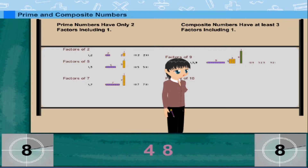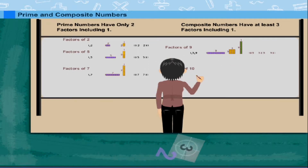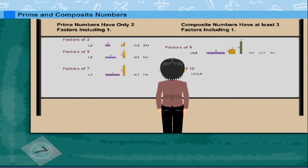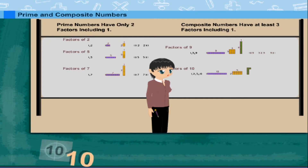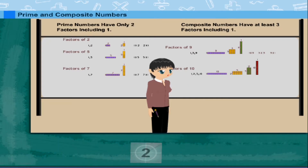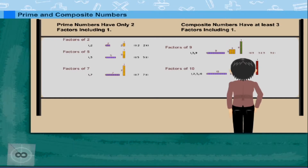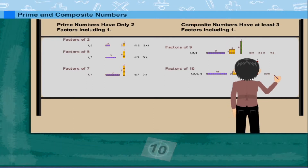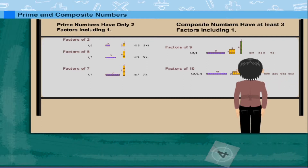And now she writes the factors of 10. These are 1, 2, 5, and 10. So this is also a composite number.